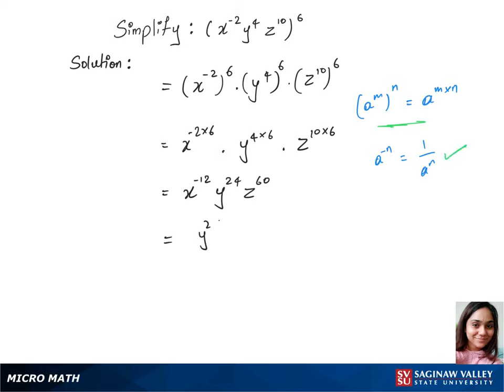Now let's write our final step using this rule, which is y^24 times z^60 over x^12. That's our final answer.